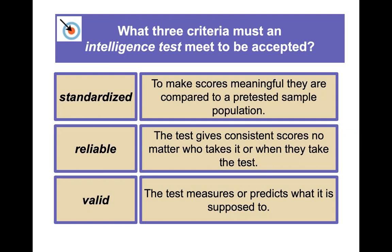Reliability means the test gives consistent scores regardless of who takes it or when. Validity means the test actually measures or predicts what it's supposed to measure. All major IQ tests include a standardization manual documenting the standardization population across different regions, ethnicities, genders, and individuals with and without disabilities — and include reliability and validity scores.